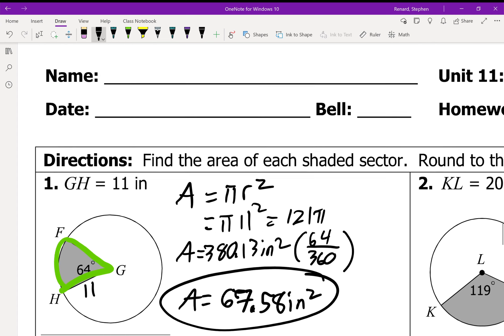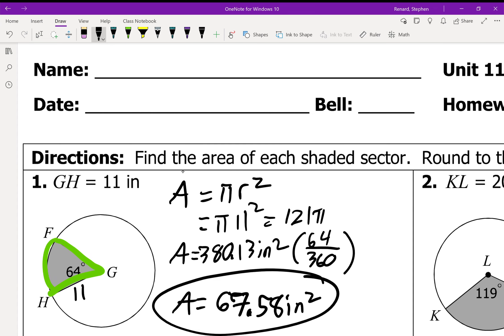So the equation we're going to use is the area of the shaded is going to be equal to pi r squared, that's the total area, times whatever degrees the shaded area is divided by 360. Because you know, 360 goes all the way around.